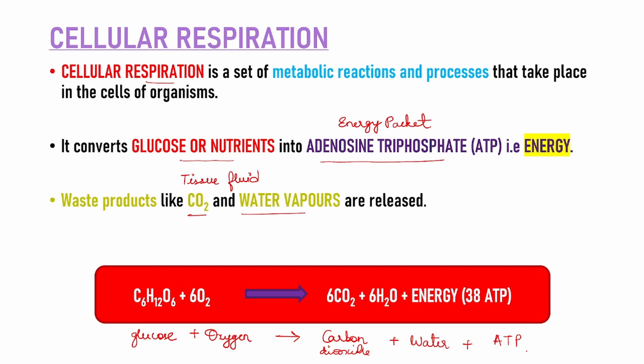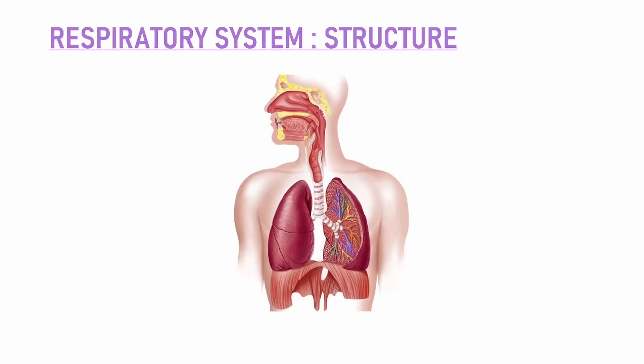So cellular respiration kya hota hai — metabolic reactions jo cell ke andar ho raha hai, ye reactions se kya banta hai — energy. So hum ne dekha respiration kitne type ke hai: external respiration, internal respiration, and cellular respiration. I hope this is clear. So let's move ahead and understand the structure of the respiratory system. Now respiratory system ke andar koun se koun se organs present hai.